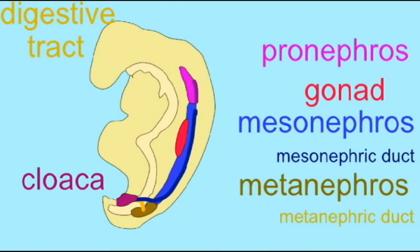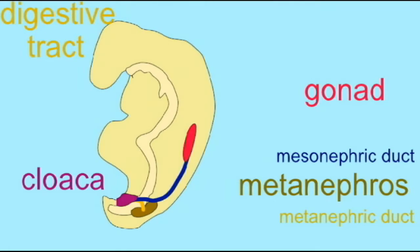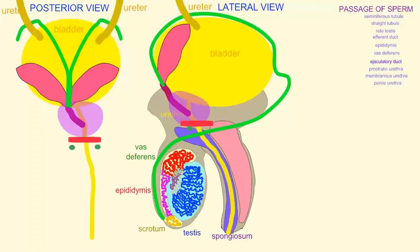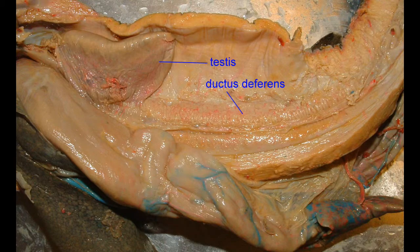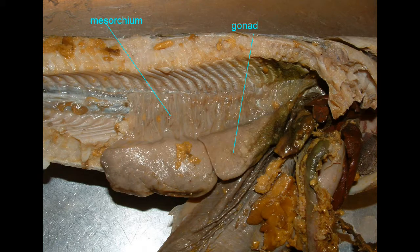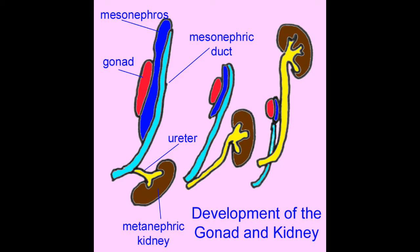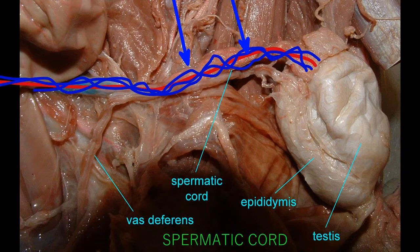Most placental mammals solve this problem in a different way: they moved the testes from their original location in the body cavity to a pouch outside the body cavity known as the scrotum. In these images you can see that in sharks, frogs, fish, and ancestral vertebrates, the testes are located in the abdominal body cavity. In human embryos, they begin their development there, then descend — ovaries descend to the pelvic brim, but the testes continue further.